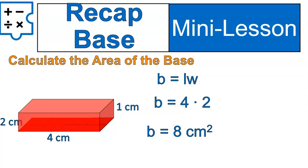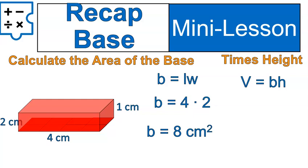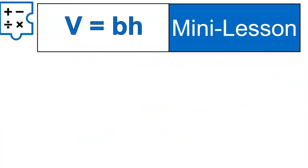Now, the volume formula that uses that base looks like this. We find the base — the area of the base — and then we multiply times the height. So in this case, it would be eight times one, which leaves us with eight cubic centimeters. That's the basics, just a recap, and you probably recognize this slide from yesterday.